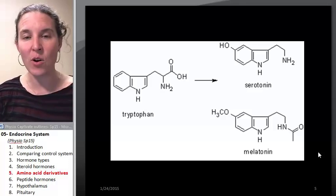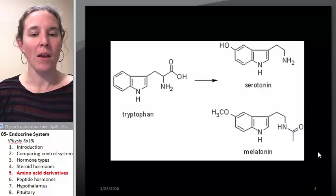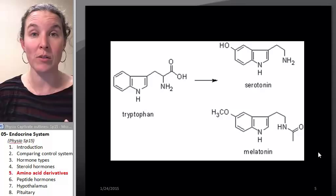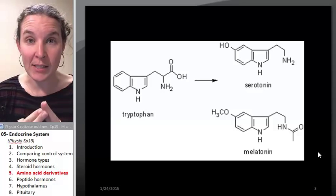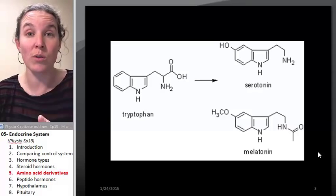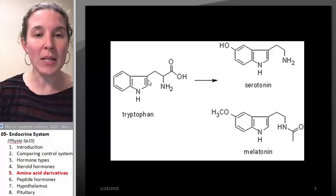So they don't have their own independent mechanisms of action. We're not going to talk about those, but I do want to talk about which hormones fall into this category. We have two primary amino acids that are the precursors that give rise to some specific hormones. One of them is tryptophan.